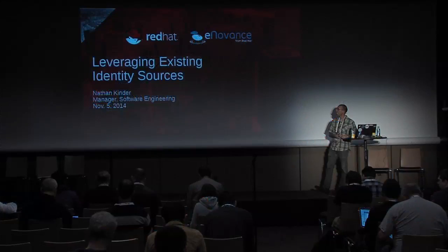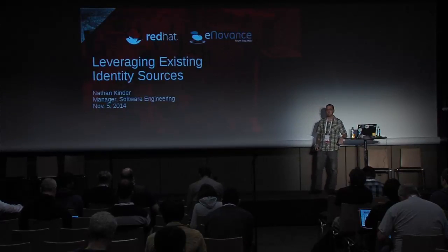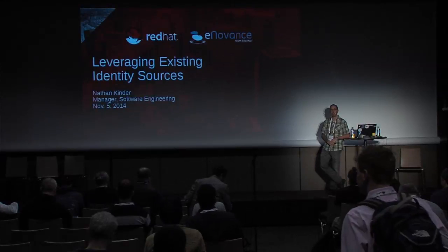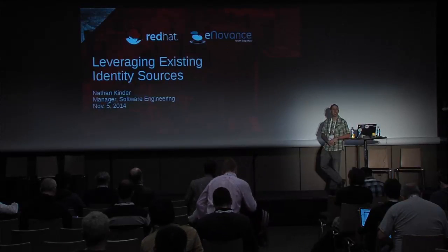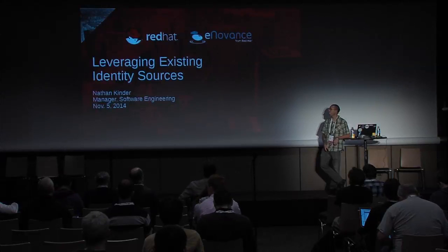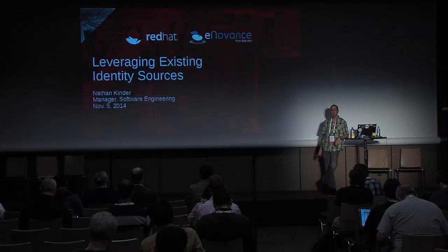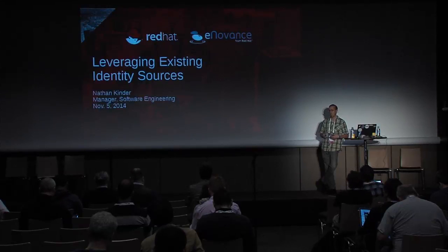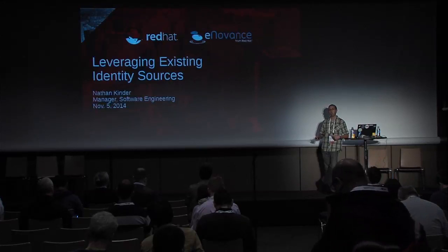I'm Nathan Kinder. I am an engineering manager at Red Hat for our identity and security OpenStack engineering team, as well as our Red Hat Directory Server product and Red Hat Certificate System products. I'm a contributor to Keystone, I'm on the OpenStack Security Group, and I've been a longtime contributor to the 389 Directory Server project upstream. So I'm going to talk about leveraging existing identity sources in OpenStack today.